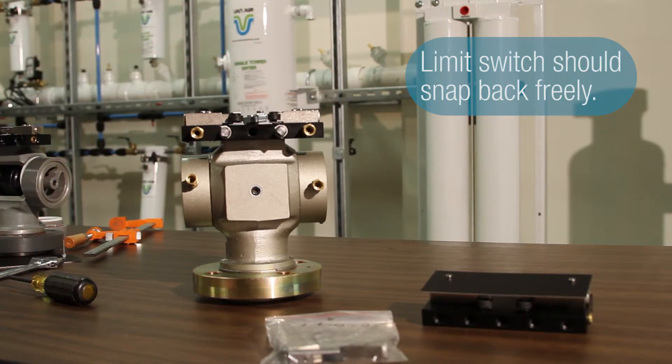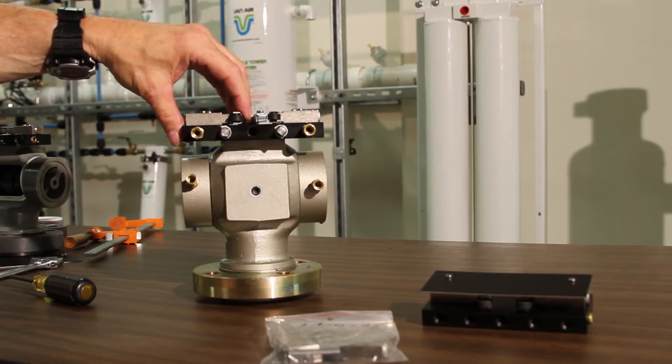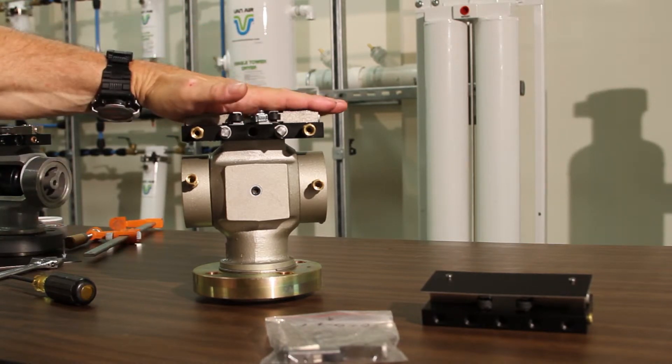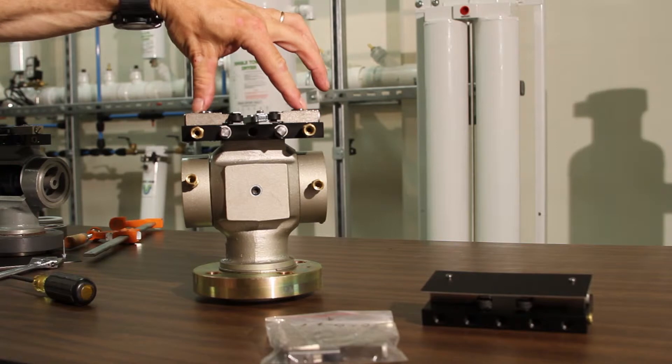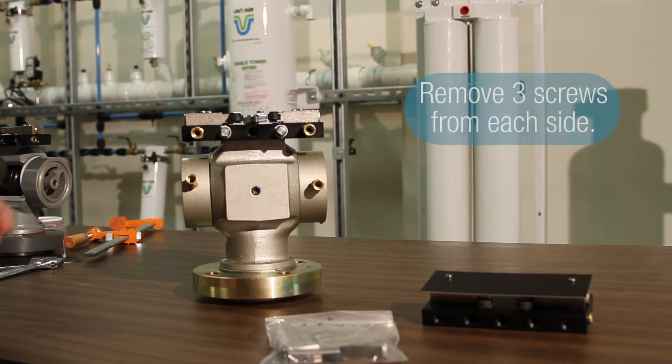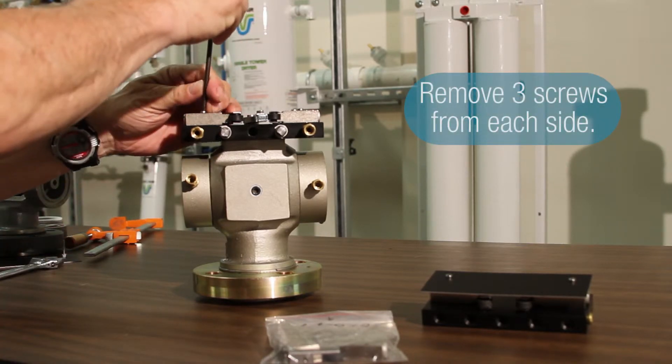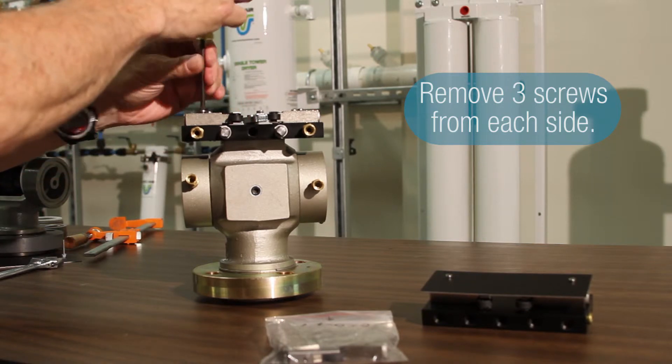or if it's allowing control air pressure through when it's not activated, you have to replace it. There are no rebuild kits for the pneumatic limit switches. They're just basically mounted on the valve with three screws each. Just take the screws out, you can lift the pneumatic limit switch right off the manifold block.